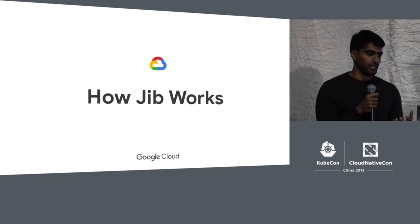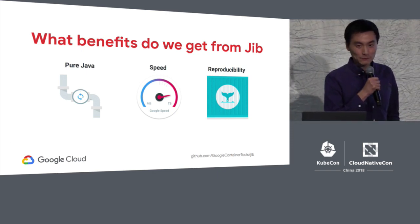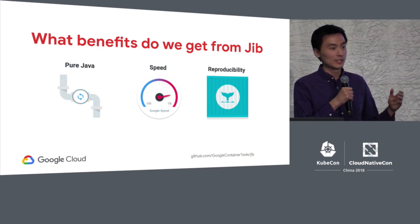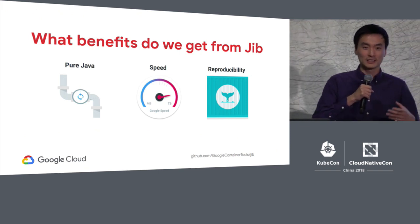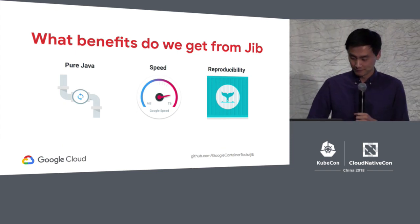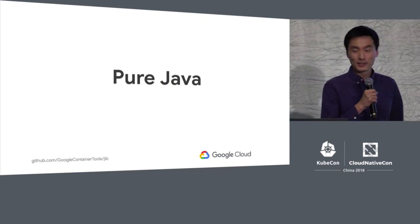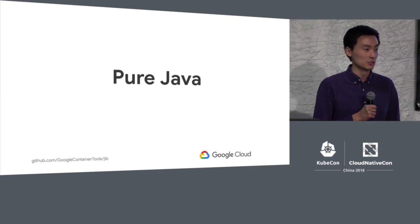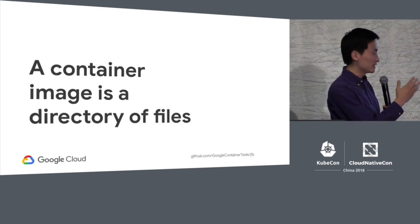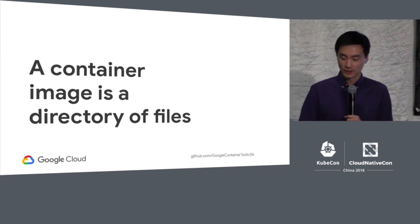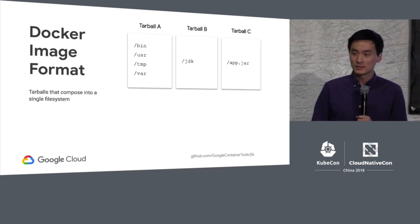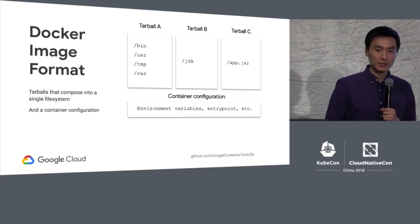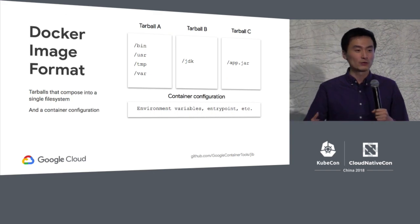Let's explore how Jib works. When developing Jib, we kept a few goals in mind: first, Jib should be purely in Java so you can run it with just your Maven or Gradle build system. Second, it should be optimized for Java applications for fast rebuilds and development iteration. Third, it should build images reproducibly. A container image is just a directory of files — in the Docker image format, split into layers represented as tarballs. There's also container configuration including entry point, volume mounts, and health checks.